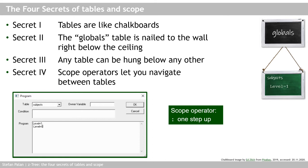Look at this. If I fill the variable 'level' with the value zero, but preface the variable name with a colon, what will happen is that Ctree modifies this variable not on the current chalkboard — which would be the subjects table — but one chalkboard higher up, which in our case brings us to the globals table chalkboard. To recap: when I create or modify variables directly in my program like 'level = 1', they are modified in the table that my program runs in, so the subjects table. When I put the colon scope operator before the variable name, I tell Ctree to look for and modify this variable one chalkboard up from the current one.